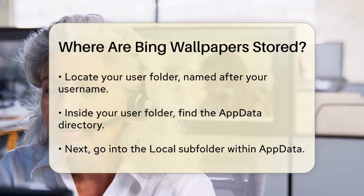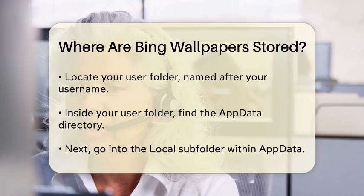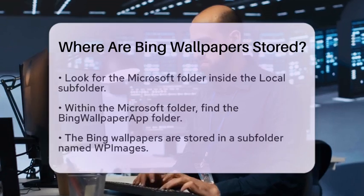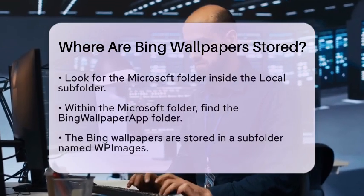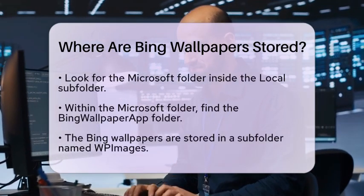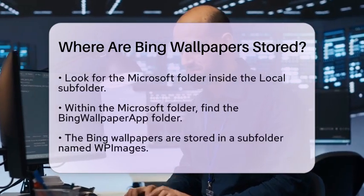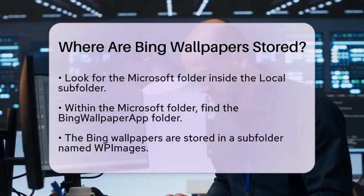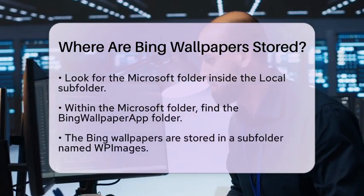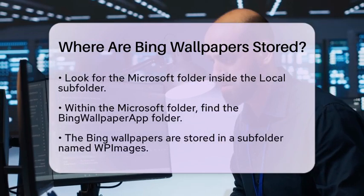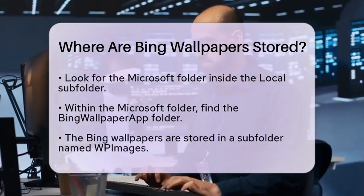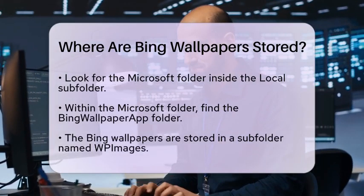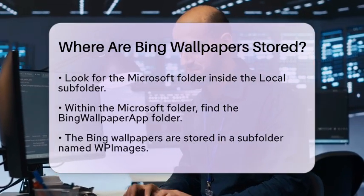Inside this folder, you'll see an AppData directory. This is where Windows stores application data, including the Bing Wallpapers. Now go into the AppData folder and then into the Local subfolder. Here, you'll find a folder named Microsoft, and within that, another folder called Bing Wallpaper App. This is the key location.